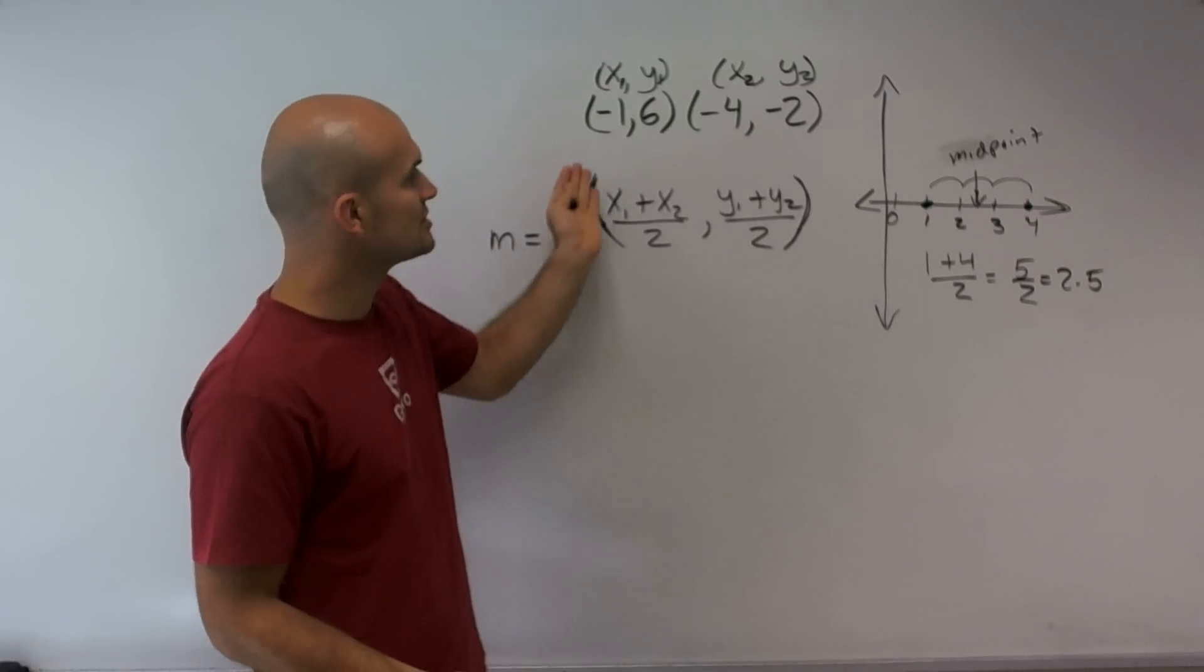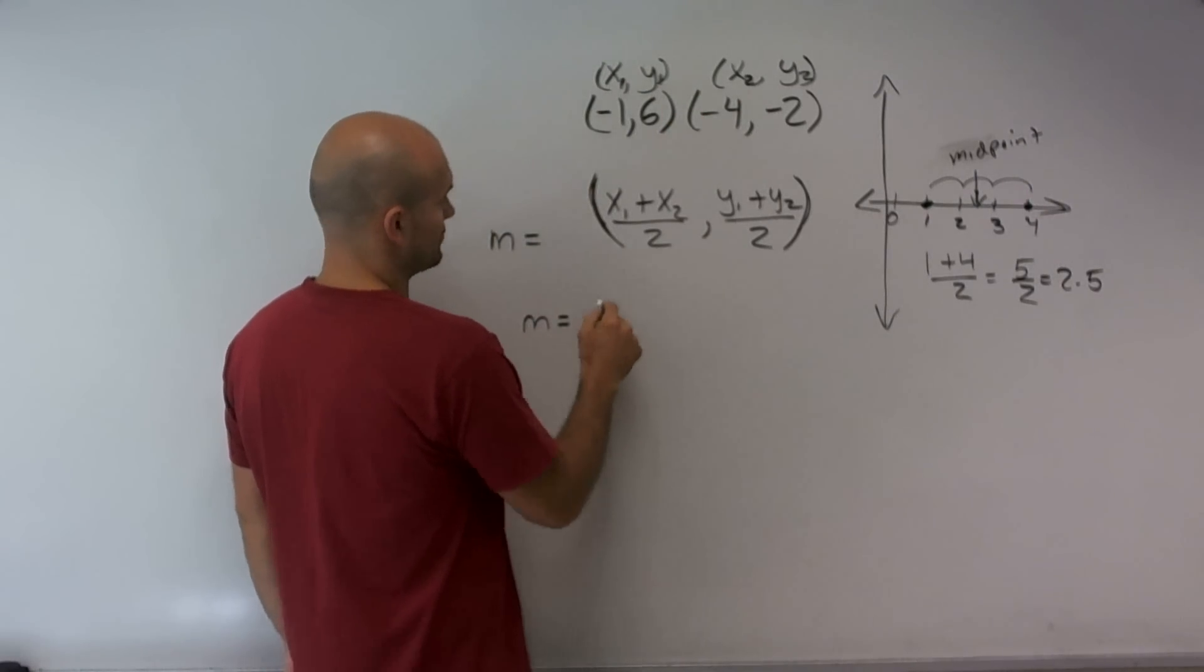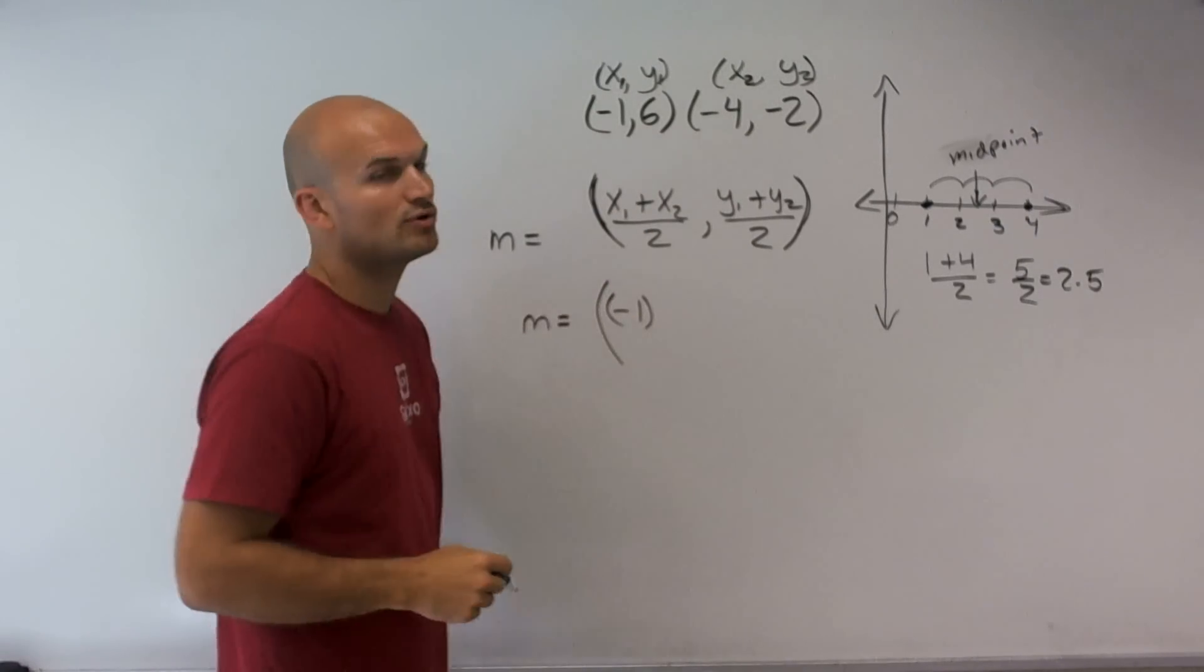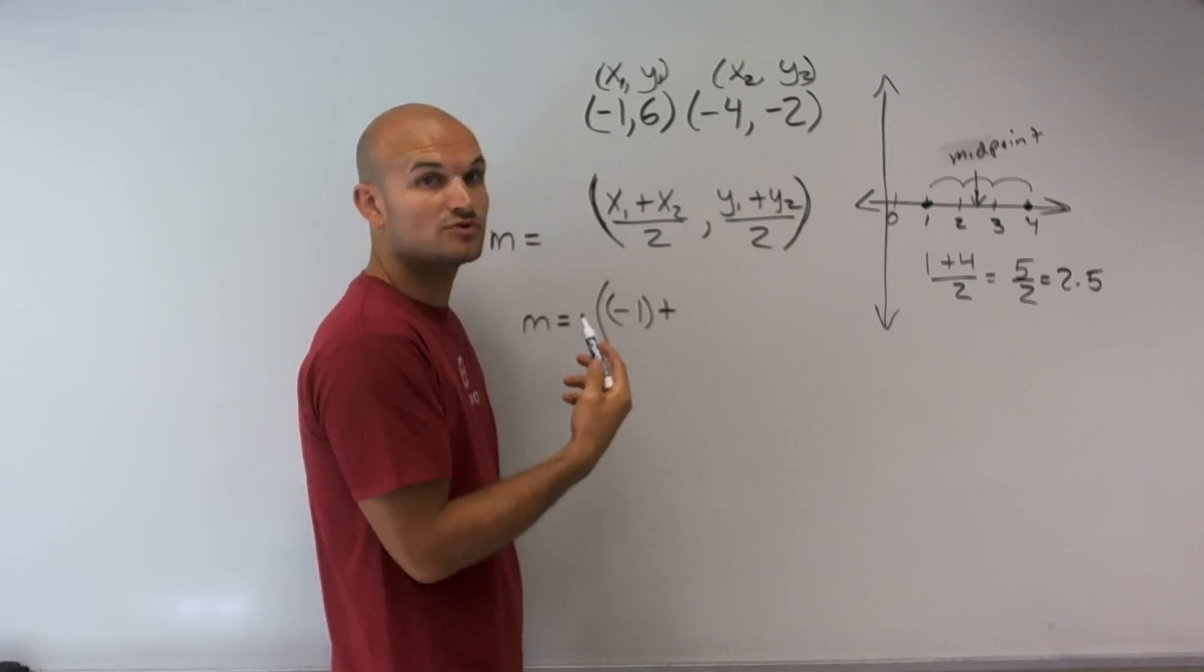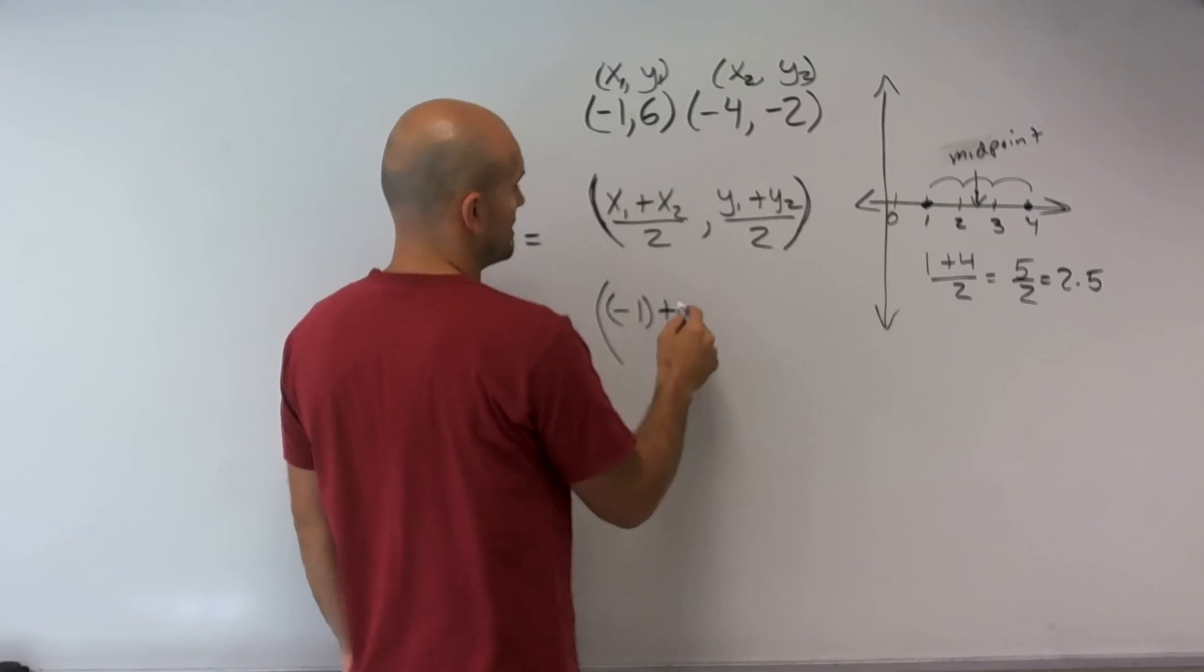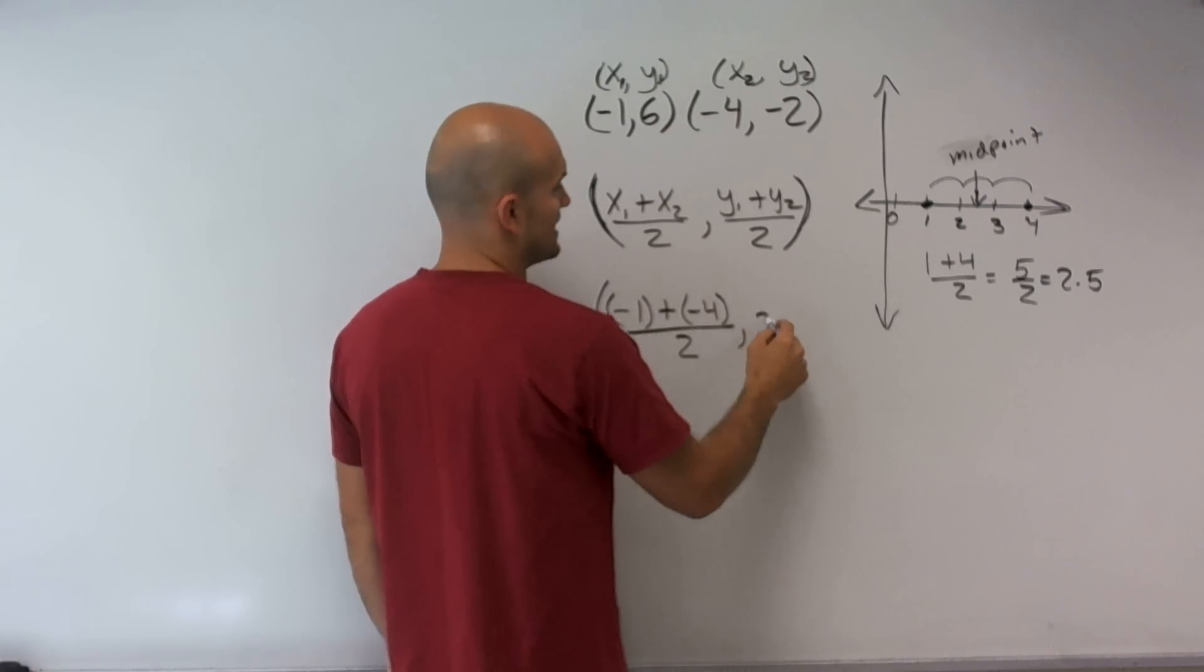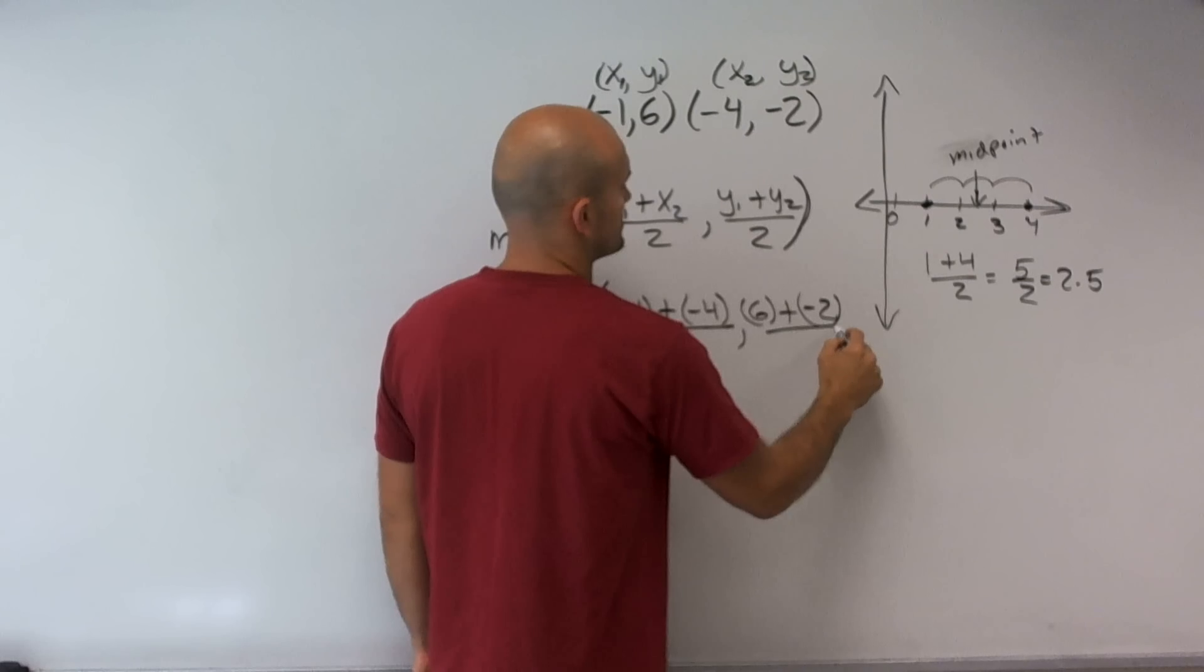So now all I need to do is just plug in my values. So m as the midpoint, m equals, as the midpoint, negative 1. And please make sure you put in parentheses just when you're adding them up, just so you don't confuse with your signs. Negative 1 plus a negative 4, all divided by 2, comma, 6 plus negative 2 divided by 2.